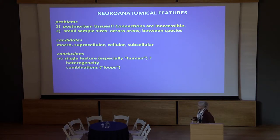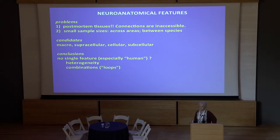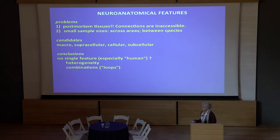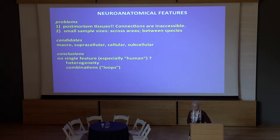The first conclusion is there seems to be no single feature, as far as we know, that characterizes the human neuroanatomically. There are, however, more of things, and in particular there are more relationships, more combinations.